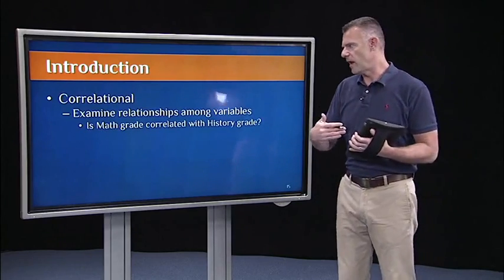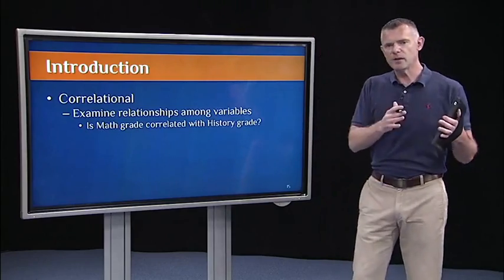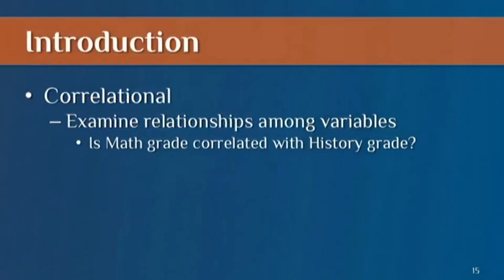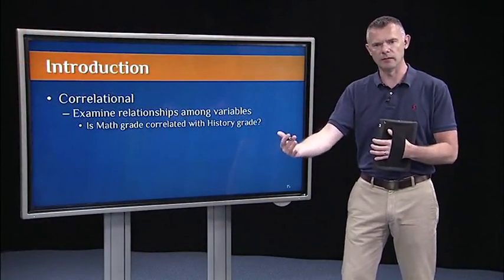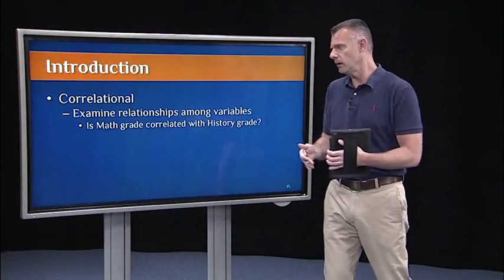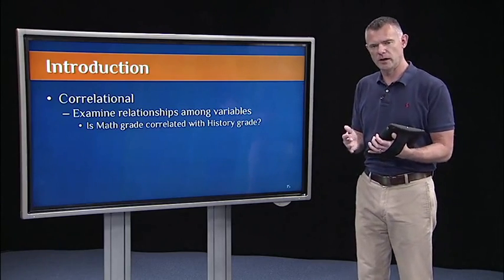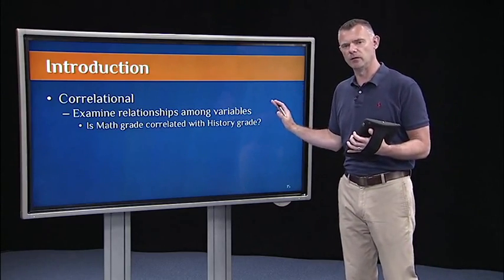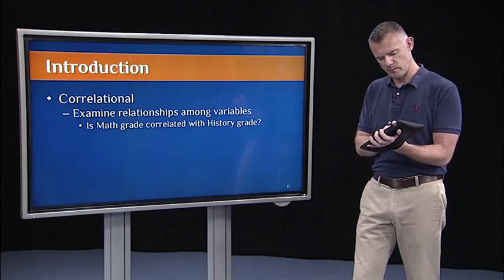Another type of method is correlational research. We might want to examine the relationship among variables in our data structure. So we might want to say, well, is math grade correlated with history grade? And is history grade correlated with the science grade? Or is age correlated with math grade? All of those are examples of correlational research. And that's going to be the main topic of lecture two. We'll spend an entire lecture talking about correlational research and correlational methods.